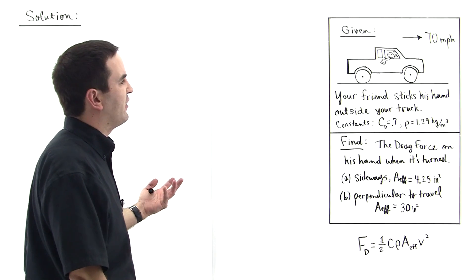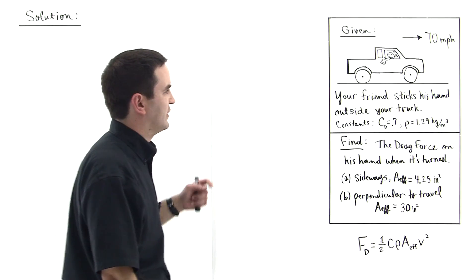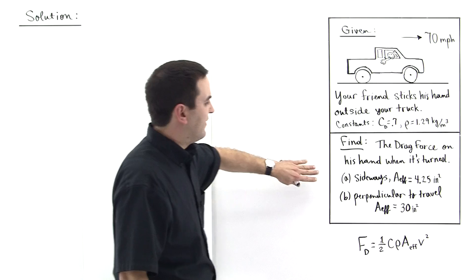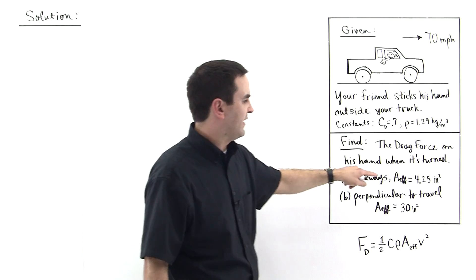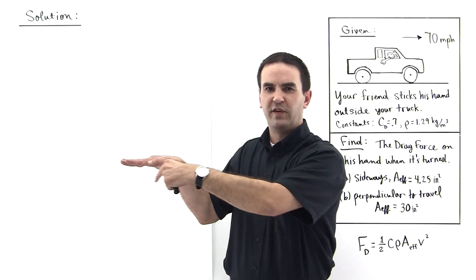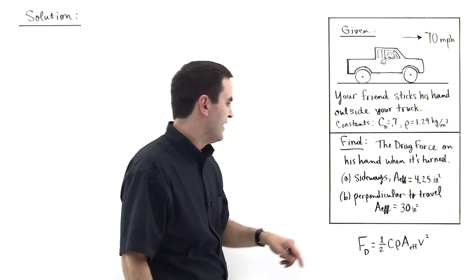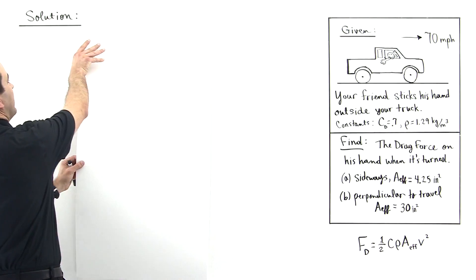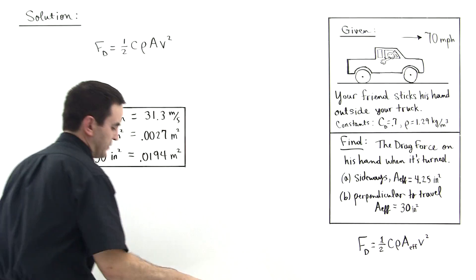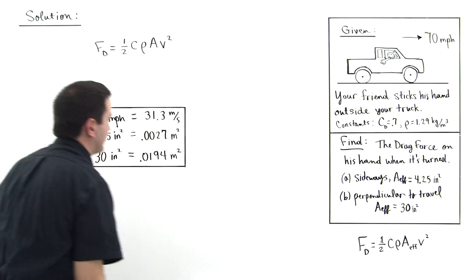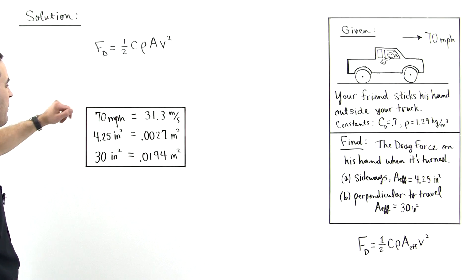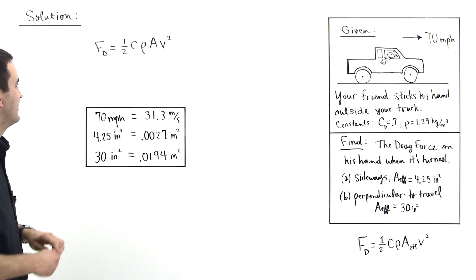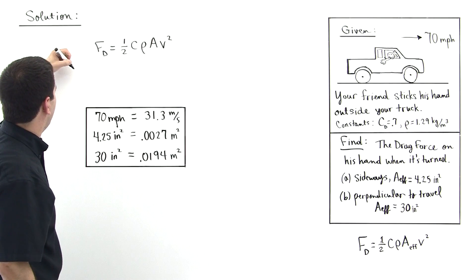Okay, so the first thing we need to do is convert everything from English to SI units. So that 70 miles per hour and these areas, I've calculated the area when it's like this to be 4.25 inches squared, I just did an approximation. And then this area whenever it's like this to be 30 inches squared. So we need to convert that to meters squared and then the velocity to meters per second. And I've done that previously for time's sake. 70 miles per hour is 31.3 meters per second, 4.25 inches squared is this and 30 inches squared is this. So part A, that's right, let's get calculating.